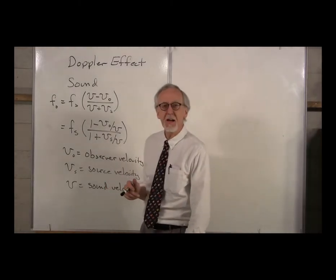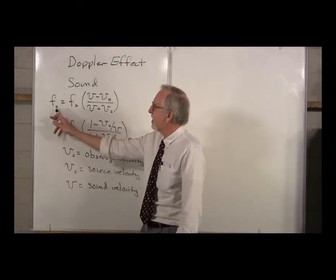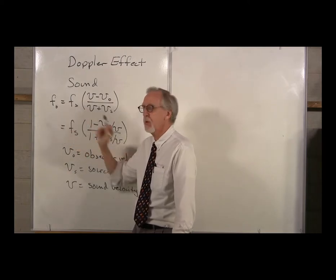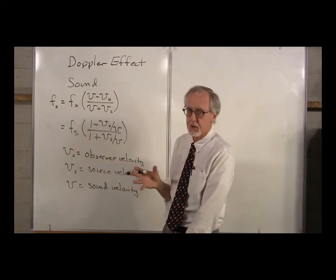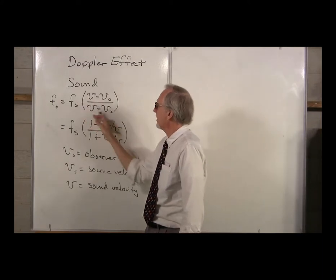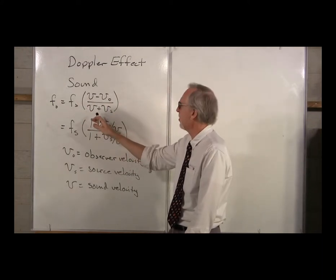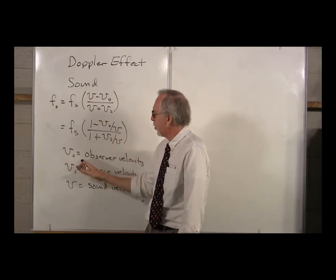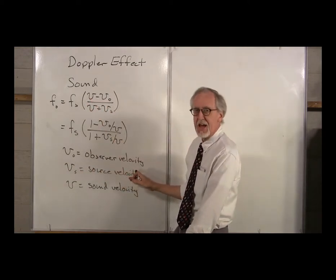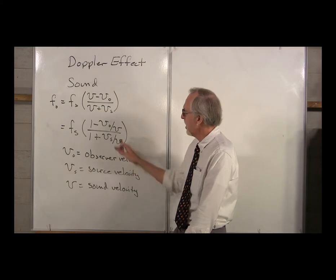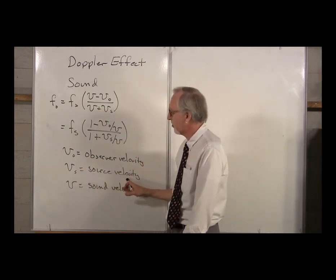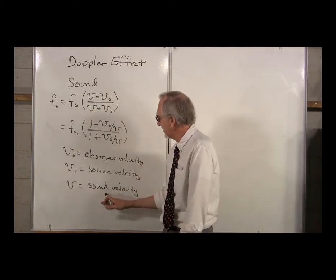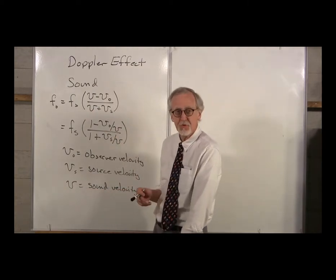For sound, what we found out last semester was that F0, the observed frequency, was equal to Fs, the source frequency, times the quantity (V minus V0) over (V plus Vs), where V0 was the observer velocity — how fast the observer was moving — Vs was the source velocity, and V was the sound velocity.